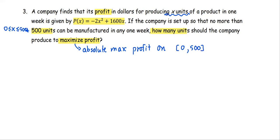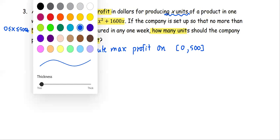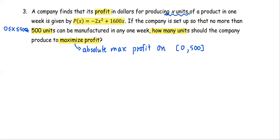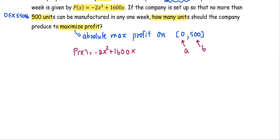So a = 0, b = 500, and the function P(x) = -2x² + 1600x. We are going to find x that gives the absolute maximum profit on the given interval.